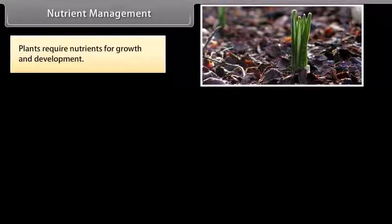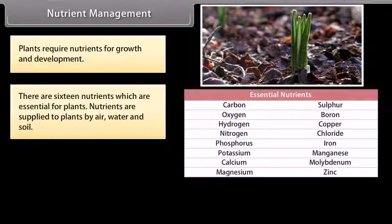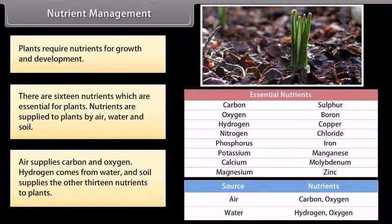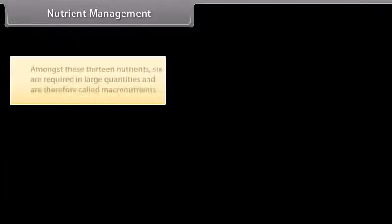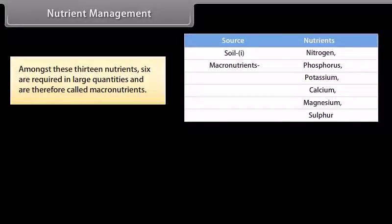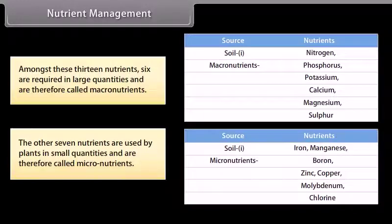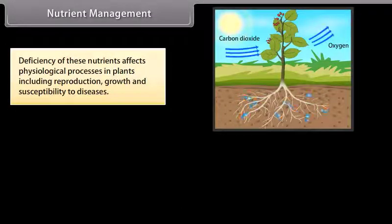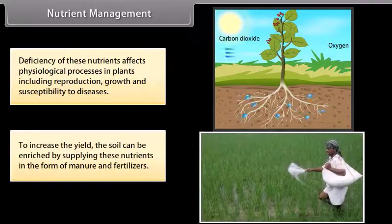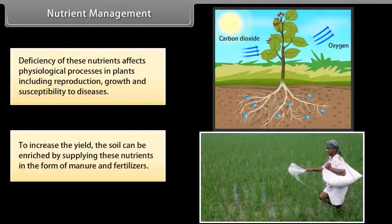Plants require nutrients for growth and development. There are 16 nutrients which are essential for plants. Nutrients are supplied to plants by air, water and soil. Air supplies carbon and oxygen, hydrogen comes from water, and soil supplies the other 13 nutrients. Amongst these 13 nutrients, 6 are required in large quantities and are therefore called macronutrients. The other 7 nutrients are used by plants in small quantities and are therefore called micronutrients. Deficiency of these nutrients affects physiological processes in plants including reproduction, growth and susceptibility to diseases.